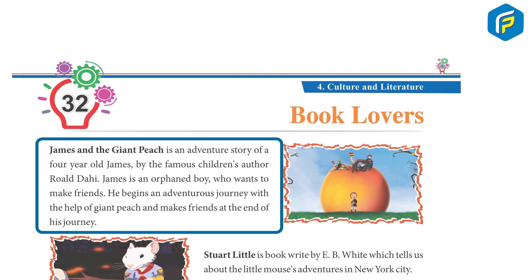James and the Giant Peach is an adventure story of a four-year-old James by the famous children's author Roald Dahl. James is an orphan boy who wants to make friends. He begins an adventurous journey with the help of the Giant Peach and makes friends at the end of his journey.